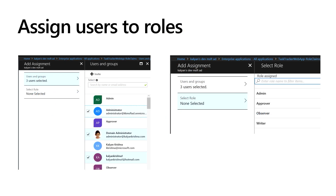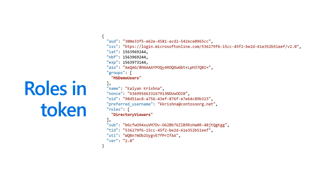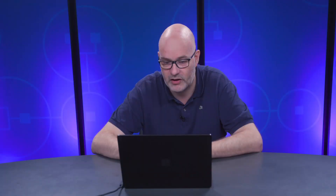When you go to user assignment, after you assign the user, you can actually select a role — that's the part on the right side — so what kind of role do you want the user to have? And once that's all in place and your application is asking for an ID token or access token, roles will actually show up in the tokens as a claim. You can see here that 'directory viewers' is a role in this specific token.